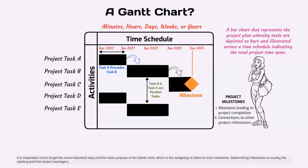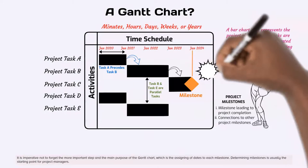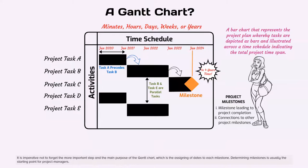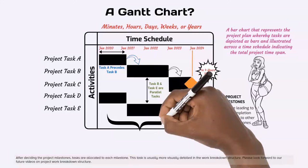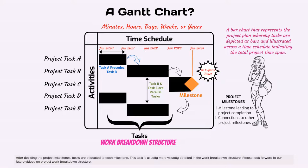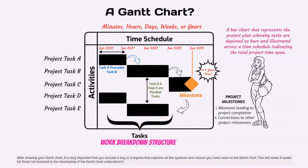It is imperative not to forget the more important step and the main purpose of the Gantt chart, which is the assigning of dates to each milestone. Determining milestones is usually the starting point for project managers. After deciding the project milestones, tasks are allocated to each milestone. This task is usually more visually detailed in the work breakdown structure. Please look forward to our future videos on project work breakdown structure.